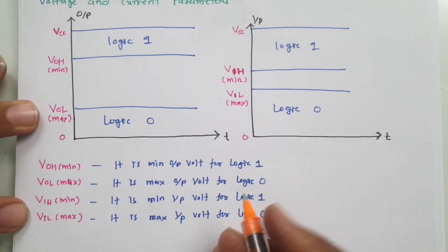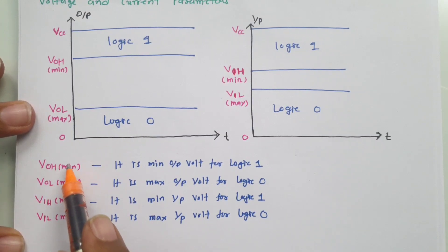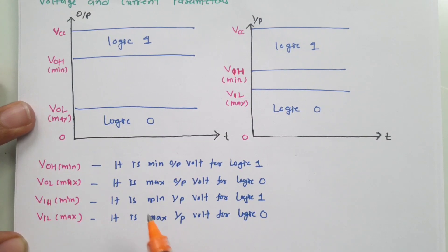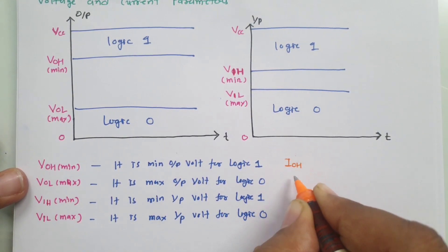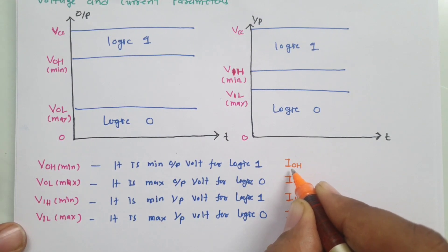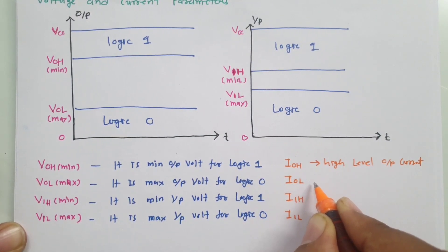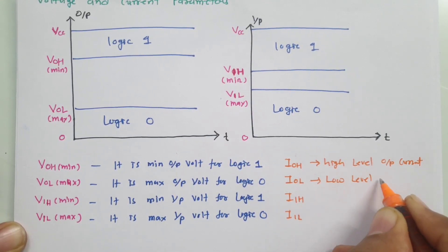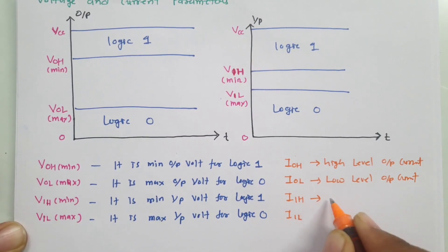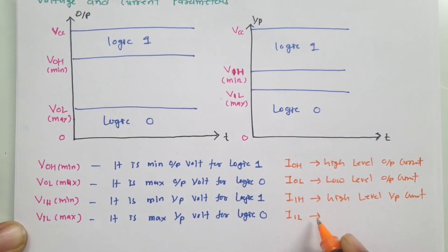Similarly, with respect to current, there are current definitions that correspond to these voltages. IOH is the high-level output current, IOL is the low-level output current, IIH is the high-level input current, and IIL is the low-level input current.